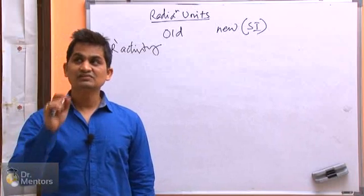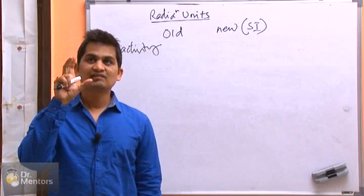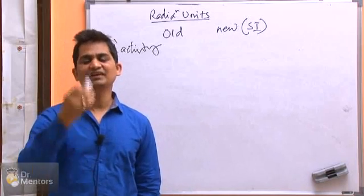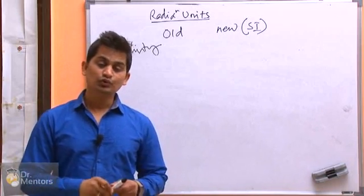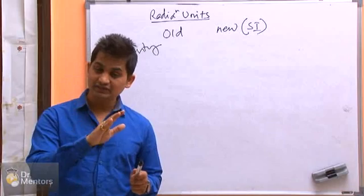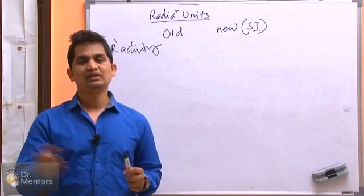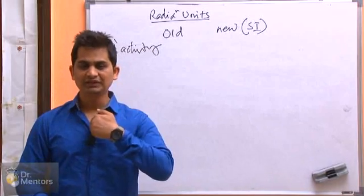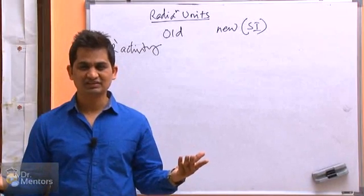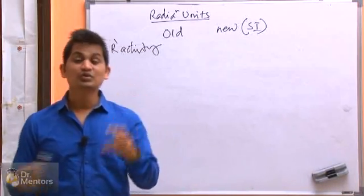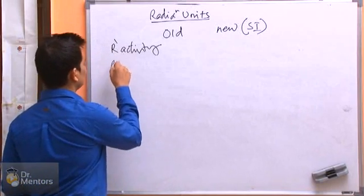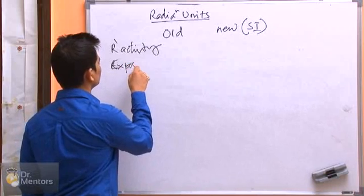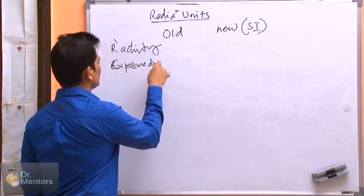First, we should know the unit of radioactivity. Suppose this is a radioactive isotope — it will have activity. So we need the old unit and new unit of radioactivity. Since this isotope is radioactive, you and I will be exposed to radiation, so we should also know the unit of radiation exposure, also called exposure dose.